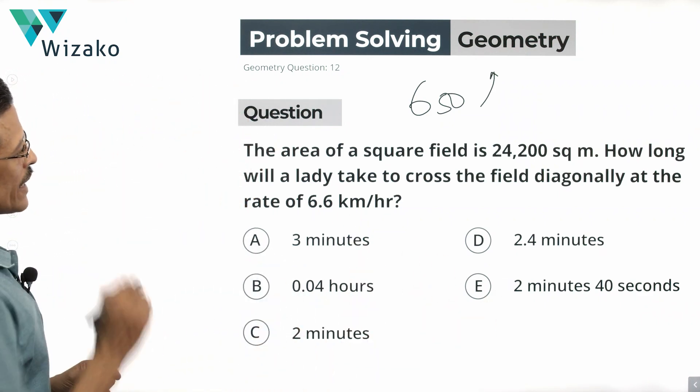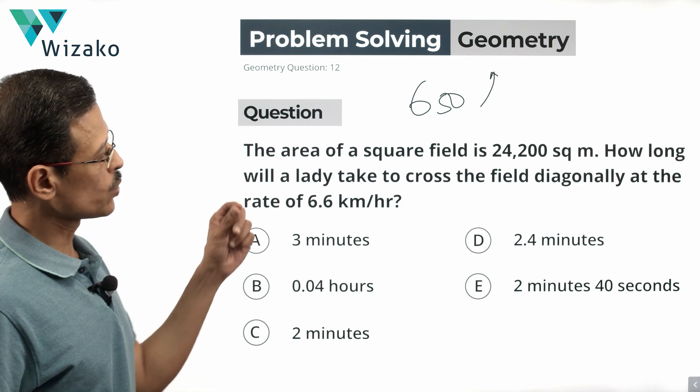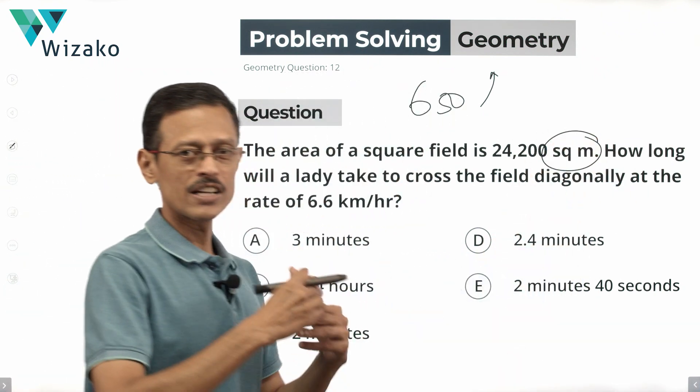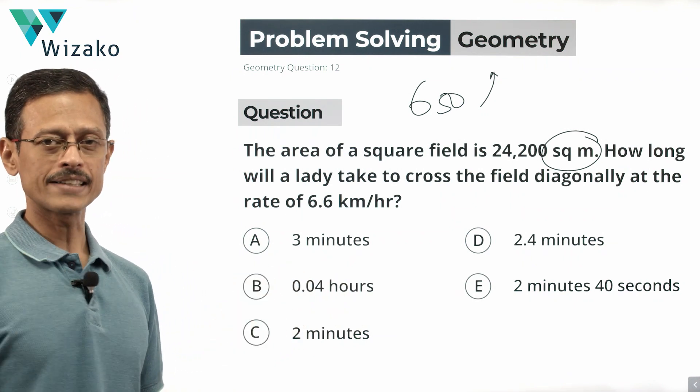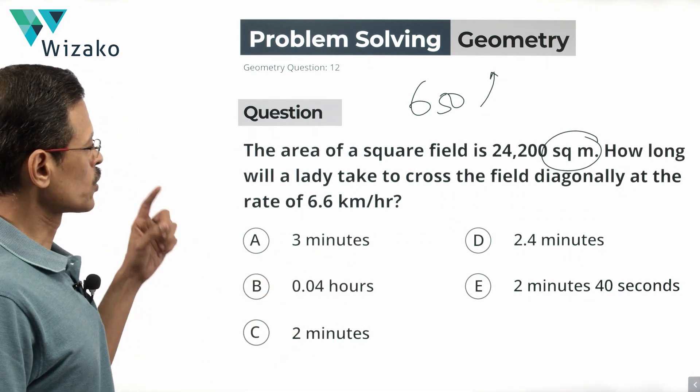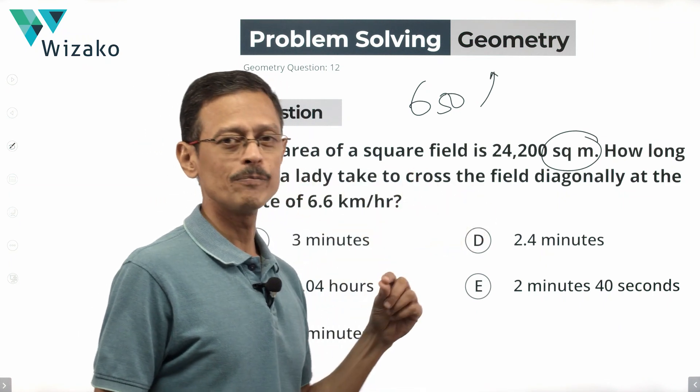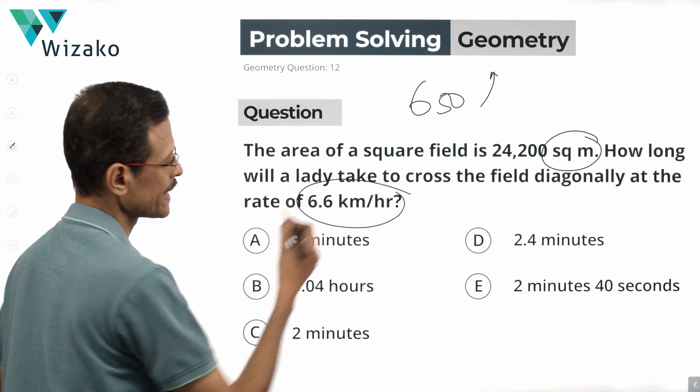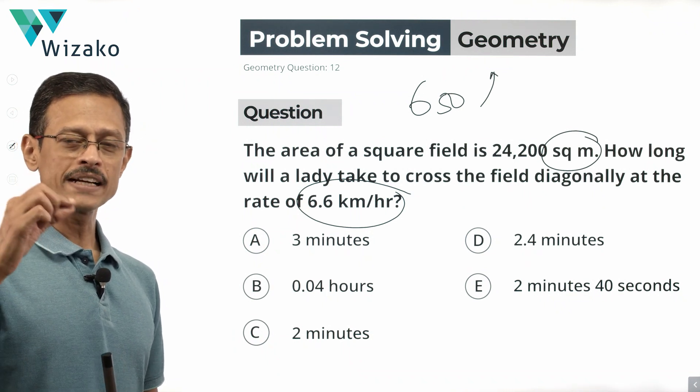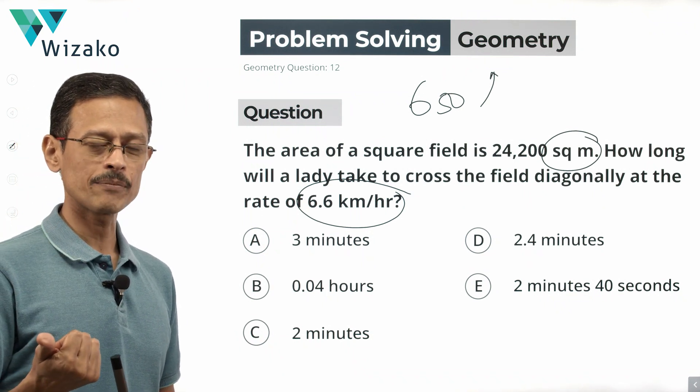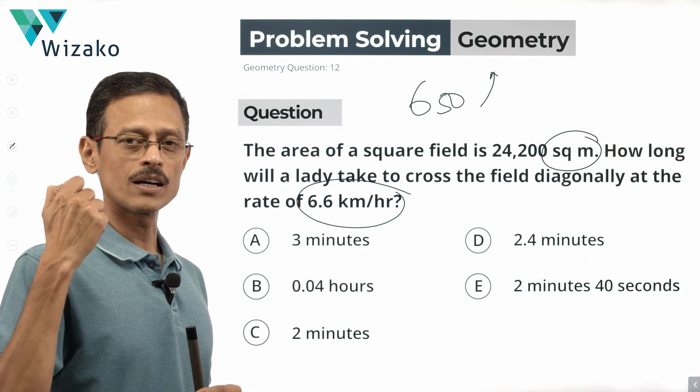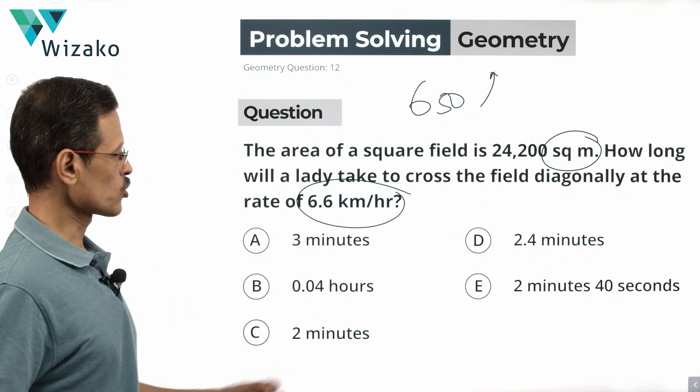The area of a square field is 24,200 square meters. So at some level the measure of length for us is in meters. How long will a lady take to cross the field diagonally at the rate of 6.6 kilometers per hour? So her speed is given to us in terms of kilometers per hour. We're going to be getting initially at least the length of the diagonal in terms of meters.